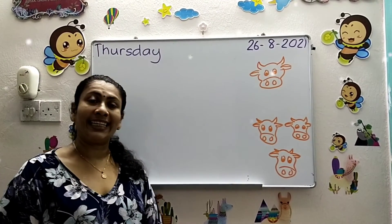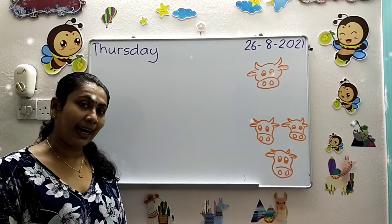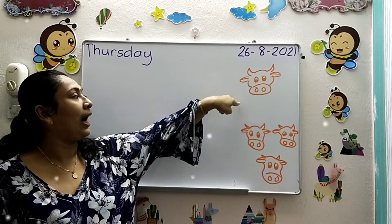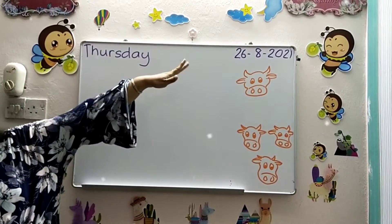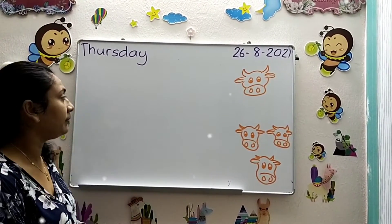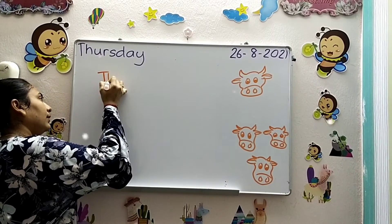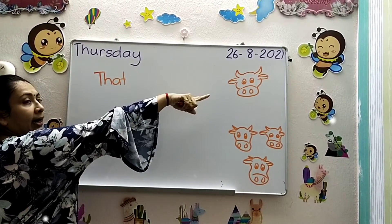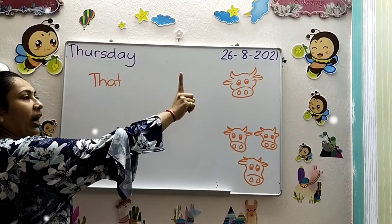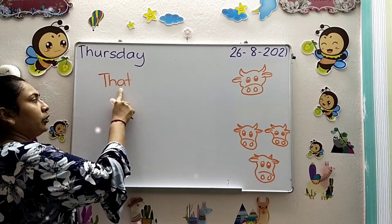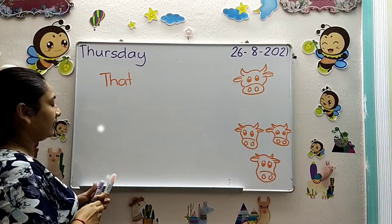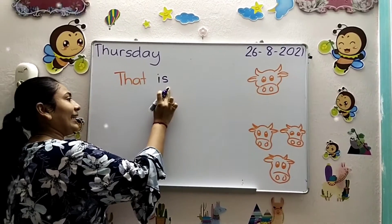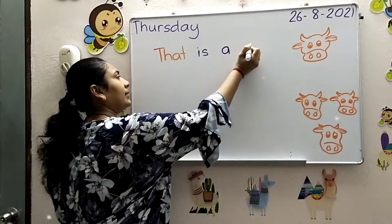Now we're going to see sentences using 'that.' The cow is far away from Teacher Shyam. So I use 'that.' How many cows do I have here? One. And the cow is far, so Teacher Shyam uses 'that is a cow.' Because it's one, I use 'is.' That is a cow.